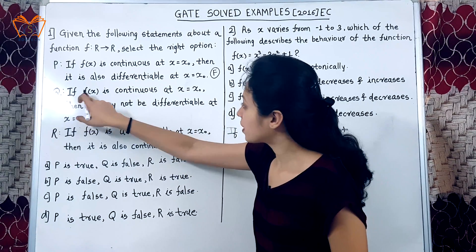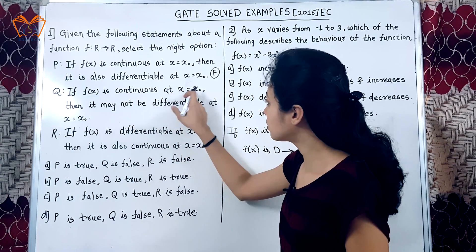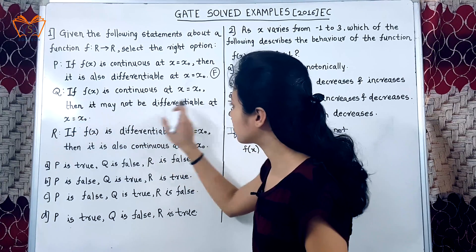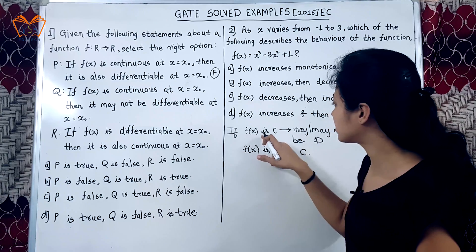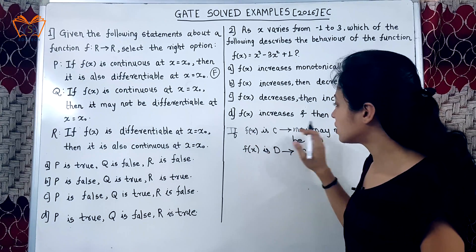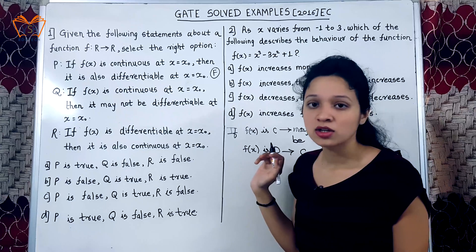Second, if f of x is continuous at x equal to x0, then it may not be differentiable at x equal to x0. Again, we will apply this statement. If it is continuous, it may not be differentiable. So, this is true.